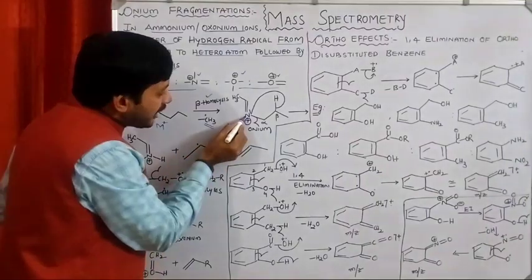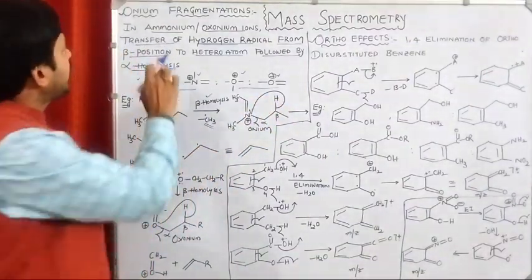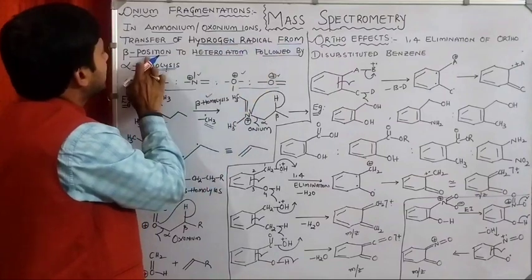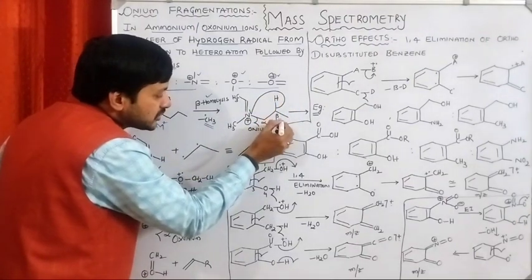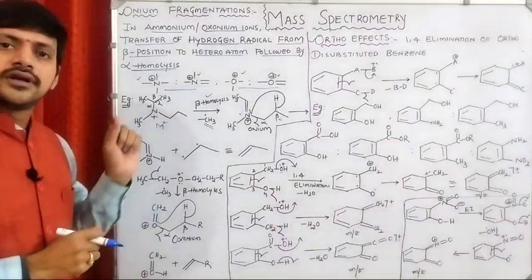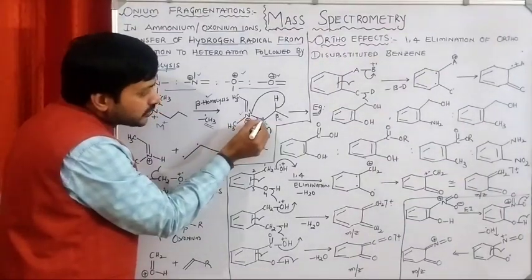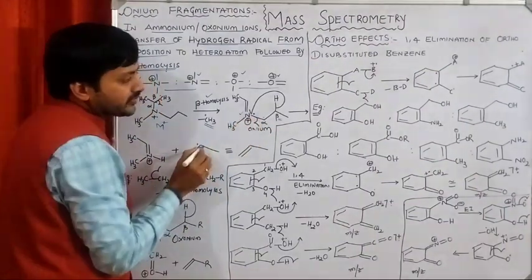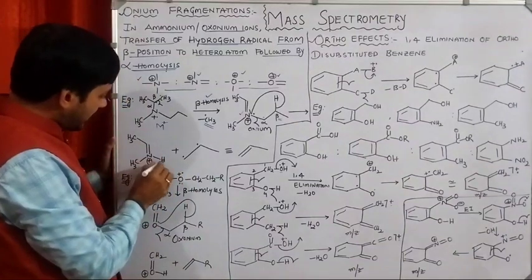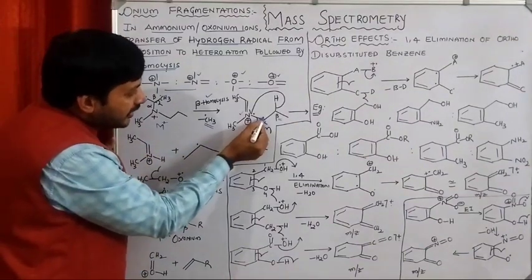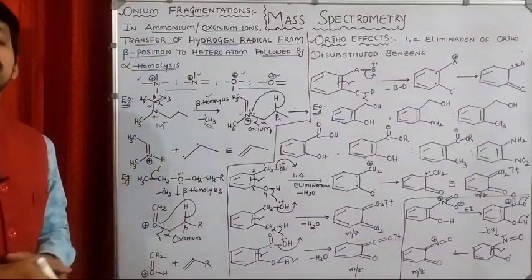With respect to nitrogen, we have alpha carbon and beta carbon. The beta position has hydrogens, so transfer of hydrogen radical from the beta position to the nitrogen heteroatom takes place. The alpha bond is then subjected to cleavage. The hydrogen radical and nitrogen radical form an N-H bond, and the alpha radical and beta radical form a pi bond. This is onium fragmentation.